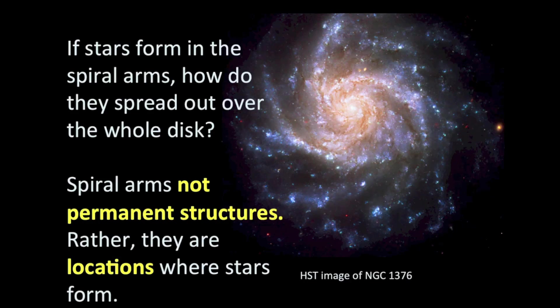So if stars form in the spiral arms, how do they spread out over the entire disk of a spiral galaxy? We have to remember that spiral arms are not permanent structures — they're just locations where stars form, and stars can drift from a spiral arm into another part of the galaxy over the course of its orbit. But if it's an O or B type star, it won't have enough time to do that. It will be born, live for just a few million years, and then blow itself up.